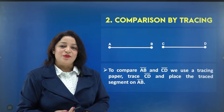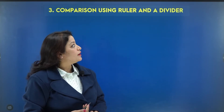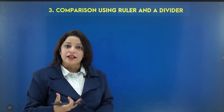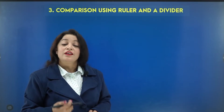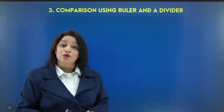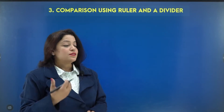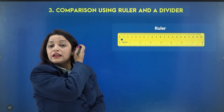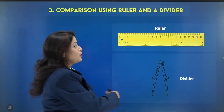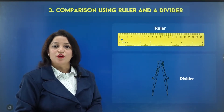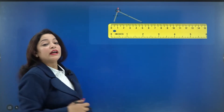Is there any other way? Yes — comparing using a ruler and a divider. A ruler means the scale you use in your geometry kit. A divider can also help you compare two line segments. You can use both of them — they are appropriate to use for comparing line segments and drawing line segments of equal length.